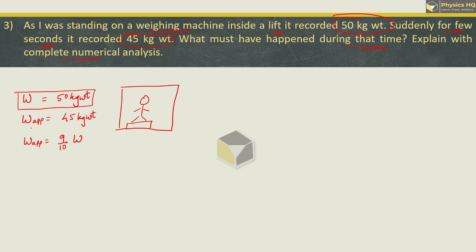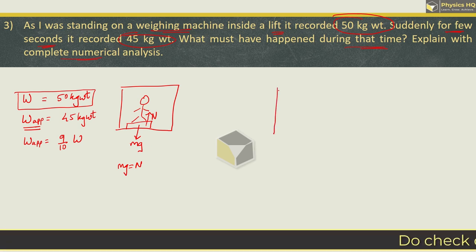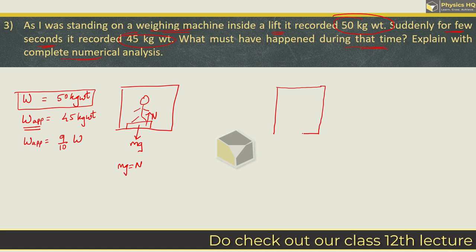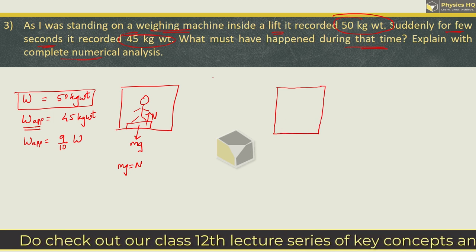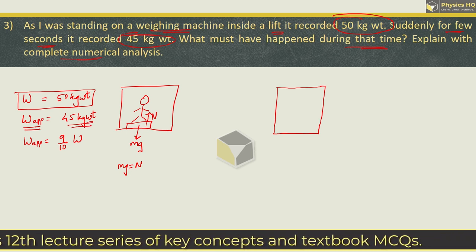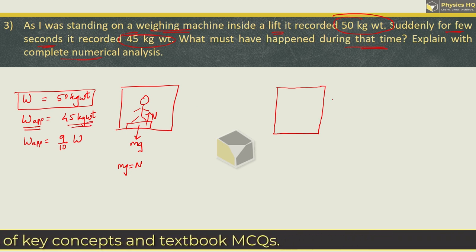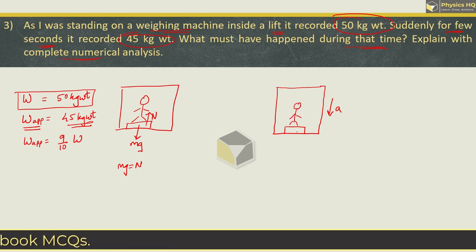The apparent weight is the reaction force we get from the ground. When the person is standing in the lift, the downward force is mg and the reaction from the ground is N. When the lift is stationary, mg equals N. We know from experience that when the lift goes up we feel heavier, and when it goes down we feel lighter. Since apparent weight is low, the lift was going down with some acceleration A.